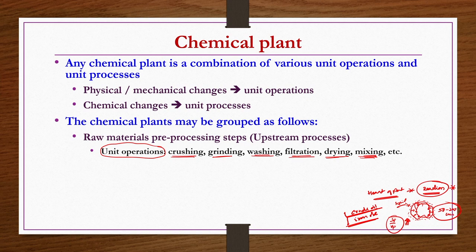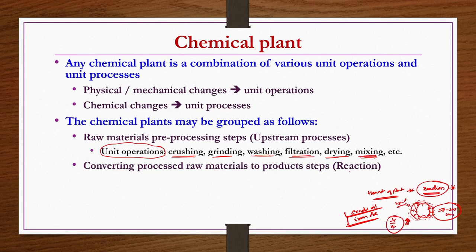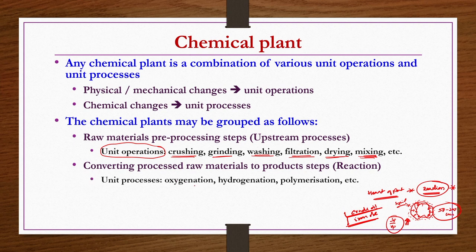Once you have processed raw material, you can do the reaction. Converting processed raw materials to products is the second step in the plant, in which chemical reactions like oxygenation, hydrogenation, polymerization, sulfonation, oligomerization, hydroprocessing, hydrotreatment, etc. may undergo. All these chemical changes are known as unit processes.